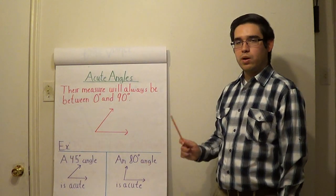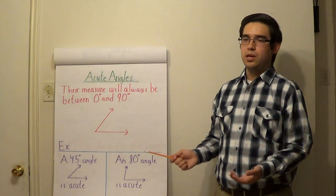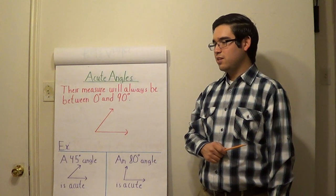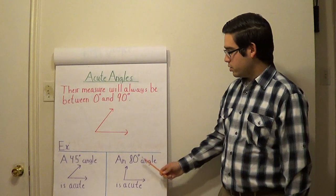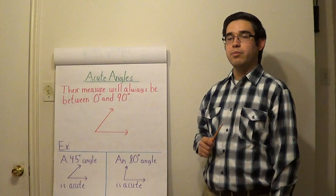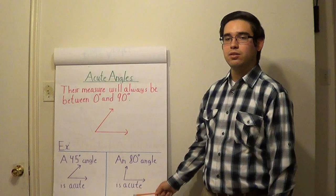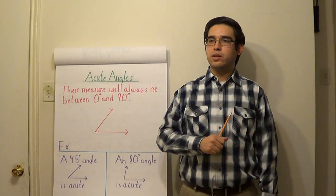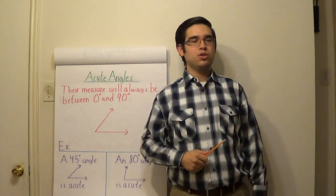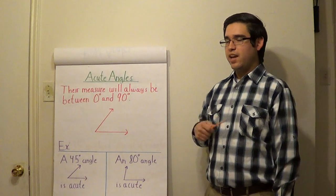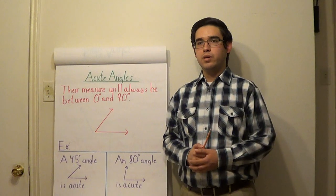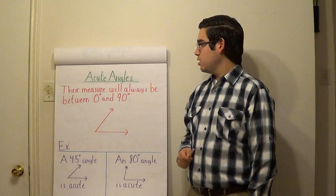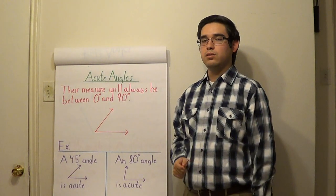Now let's consider 80 degrees — that one's pretty close to 90. Would that still be an acute angle? Is 80 degrees between 0 and 90 degrees? Yes it is. Remember class, even though it's close to 90, 80 degrees is still less than 90 and still between 0 and 90, so it is an acute angle. Can any of you give me other examples? A 13 degree angle would be acute, also a 20 degree angle. What if I had an angle like 89.9? It's still between 0 and 90 degrees, so 89.9 would still be an acute angle. So long as it's less than 90, it will be an acute angle.